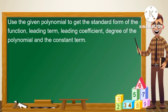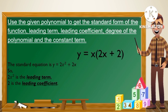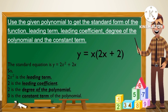Another example: use the given polynomial to get the standard form, leading term, leading coefficient, degree of the polynomial, and constant term. Given: y is equal to x times the quantity of 2x plus 2. Since the function is in factored form, we need to rewrite it in standard form. We distribute x: x times 2x equals 2x squared, and x times 2 equals 2x. Therefore, the standard form is y is equal to 2x squared plus 2x. The leading term is 2x squared, the leading coefficient is 2, the degree is 2, and the constant term is 0.